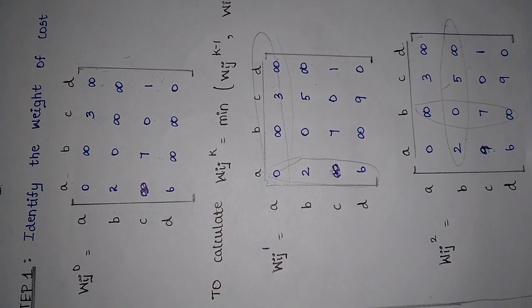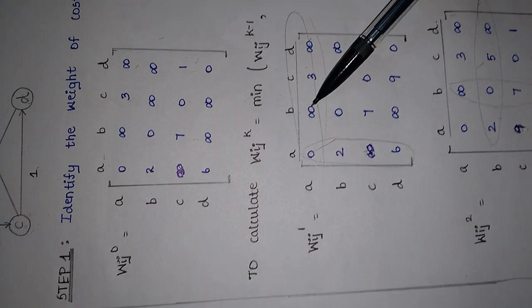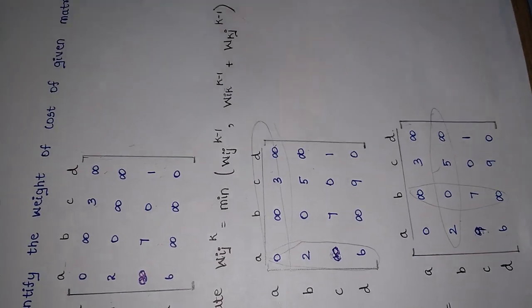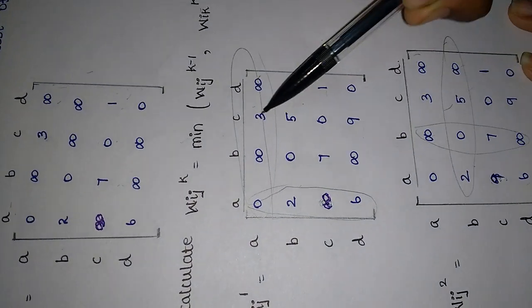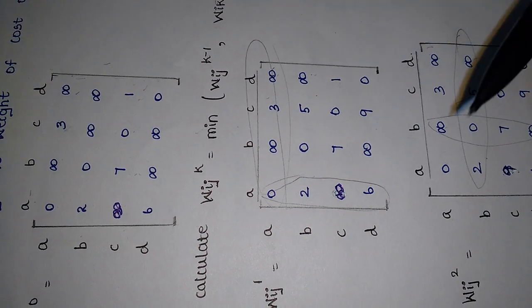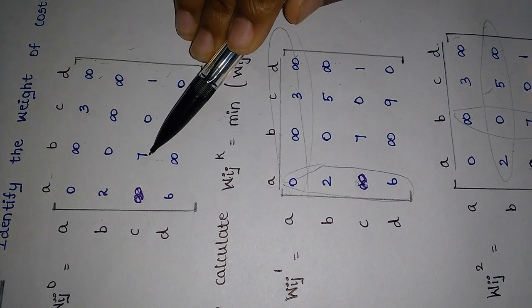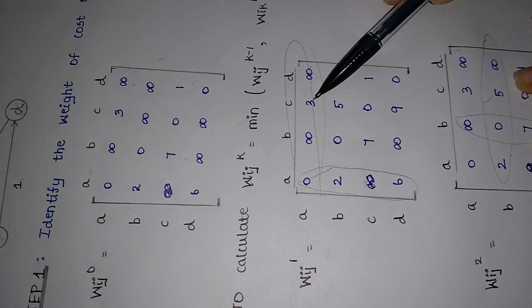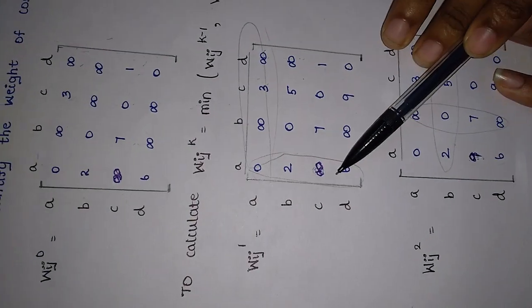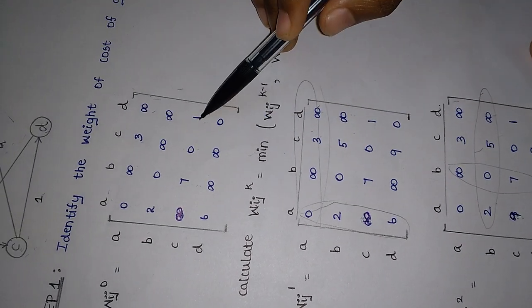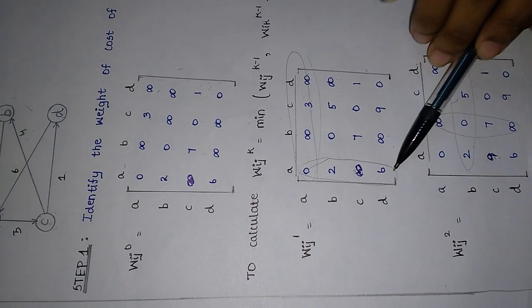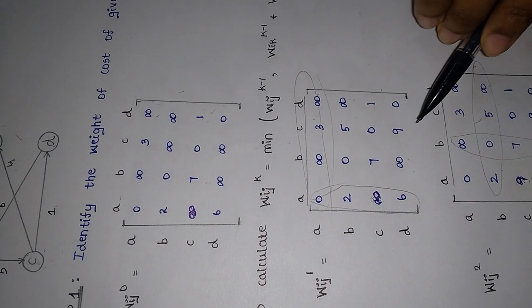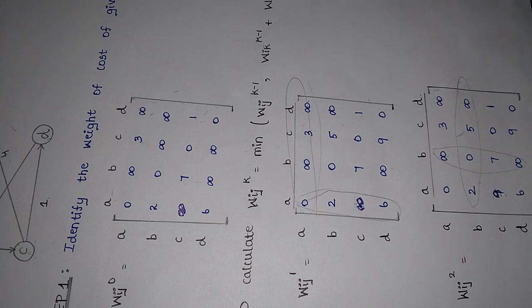Then we calculate W[i][j][1]. We consider the first row and the first column and compare. 2 plus infinity is infinity, but we have 0 here — 0 is less than infinity, so write 0. 2 plus 3 is 5. 2 plus infinity is infinity. Infinity plus infinity is infinity, but we have 7 — 7 is less than infinity, so write 7. Infinity plus 3 is infinity, but 0 is less, so write 0. Infinity plus infinity is infinity, but 1 is less, so replace by 1. 6 plus infinity is infinity; 6 plus 3 is 9 — 9 is less than infinity, so write 9. 6 plus infinity is infinity, but 0 is less, so write 0.